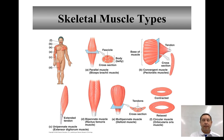Then we have the pennate muscles. There are three types of pennate muscles: unipennate, bipennate, and multipennate, and they all have to do with the fascicles forming common angles with a central tendon.